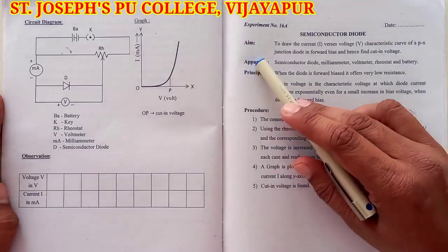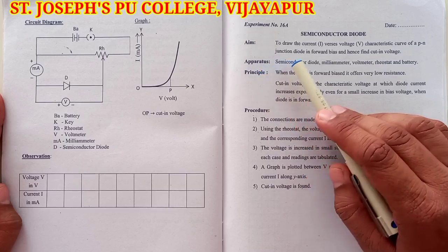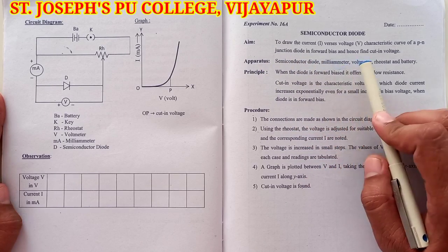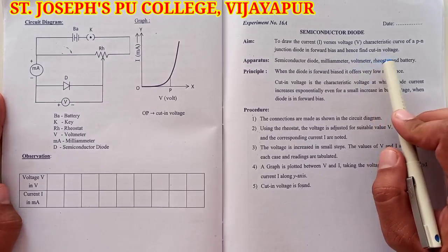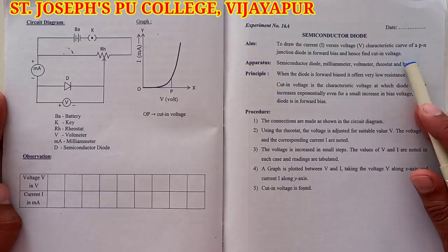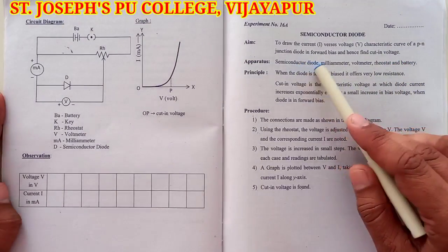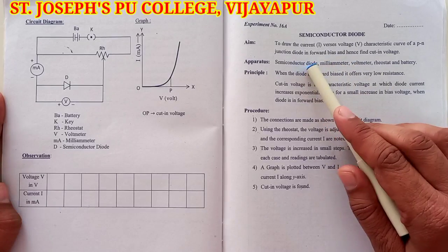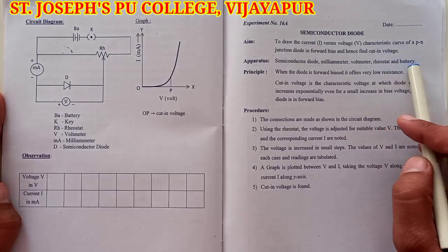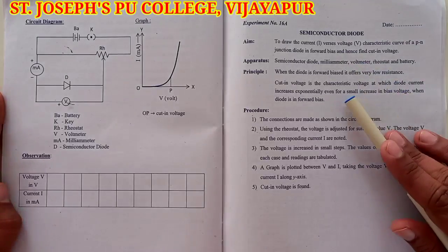Now let us move on to the apparatus. What are the apparatus required for this experiment? Semiconductor diode, milli-ammeter, voltmeter, rheostat, and battery. These are the apparatus required. I hope you are familiar with all the apparatus except semiconductor diode. Milli-ammeter, voltmeter, rheostat, and battery — we know. Only the semiconductor diode — we will see that later.